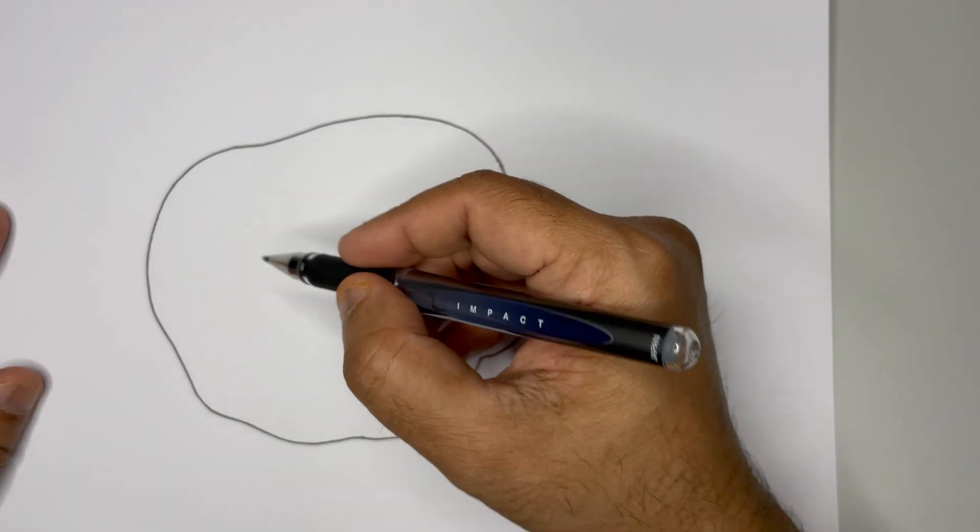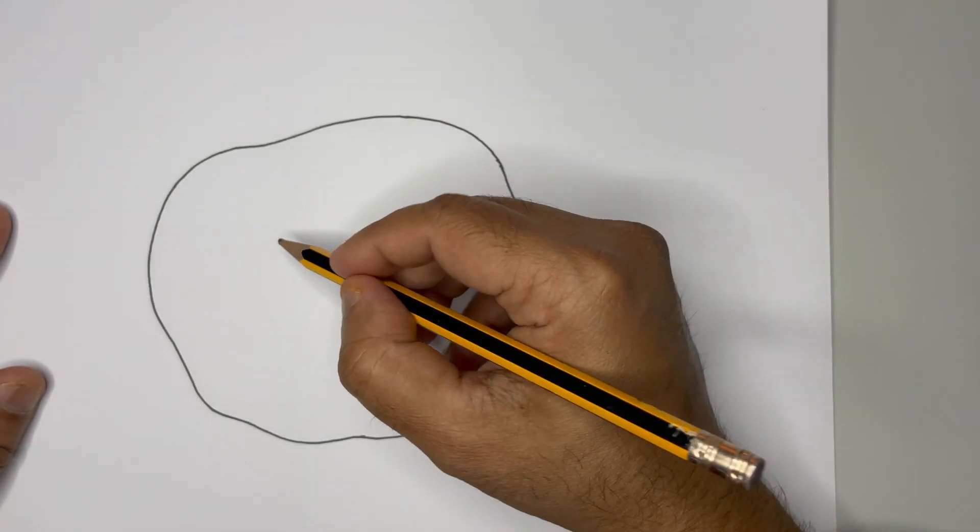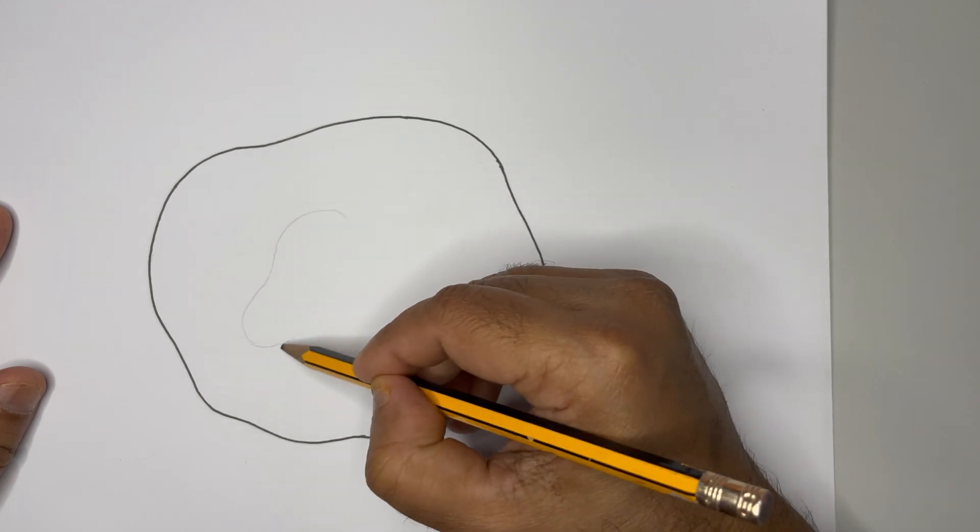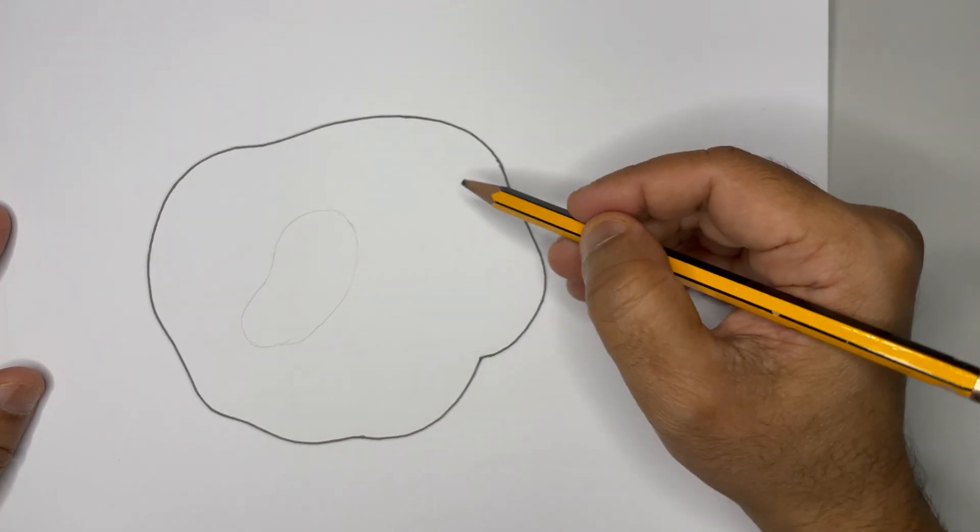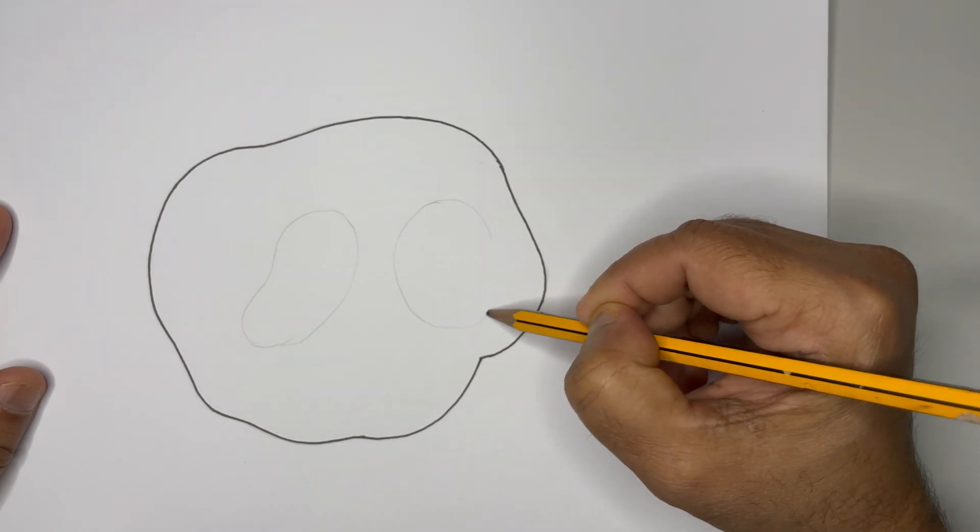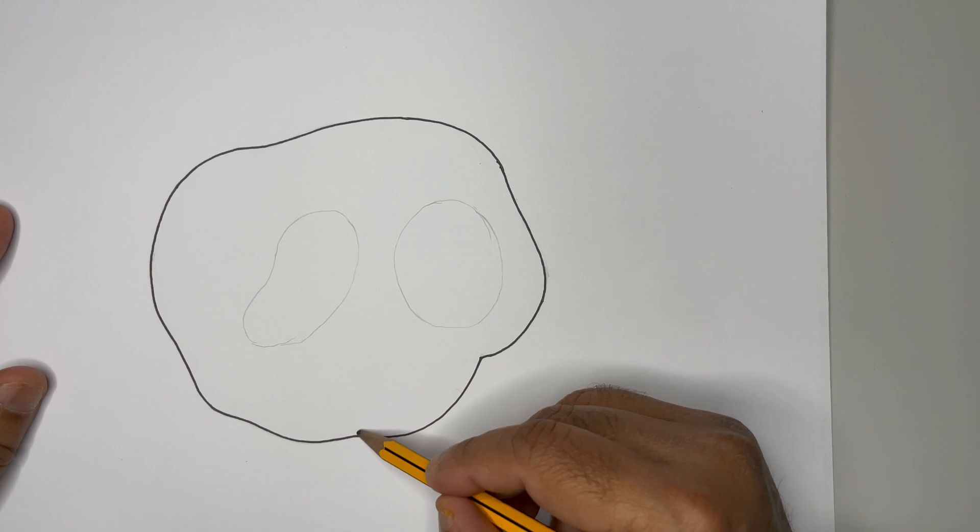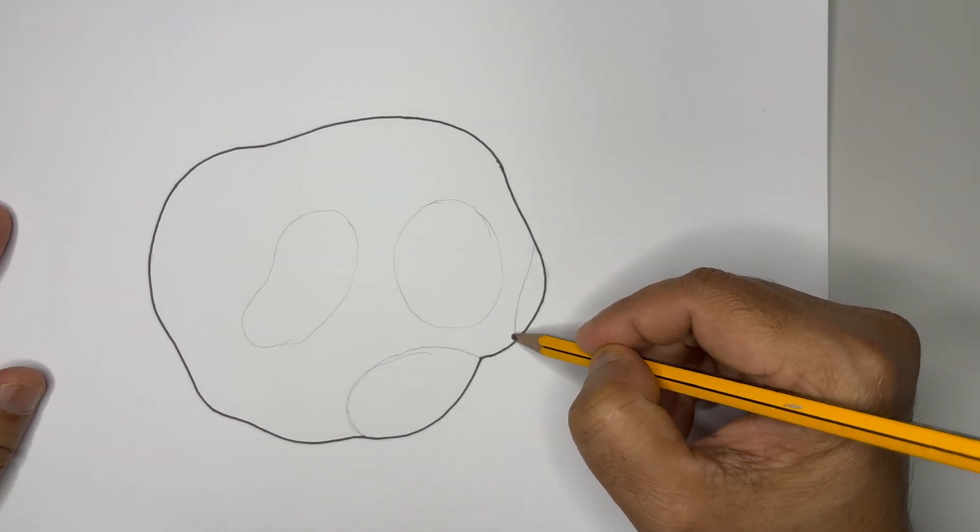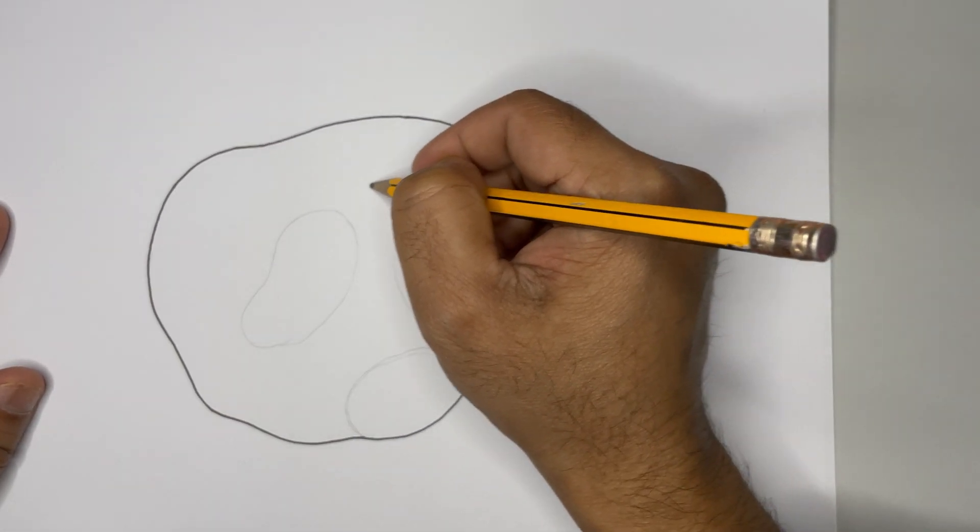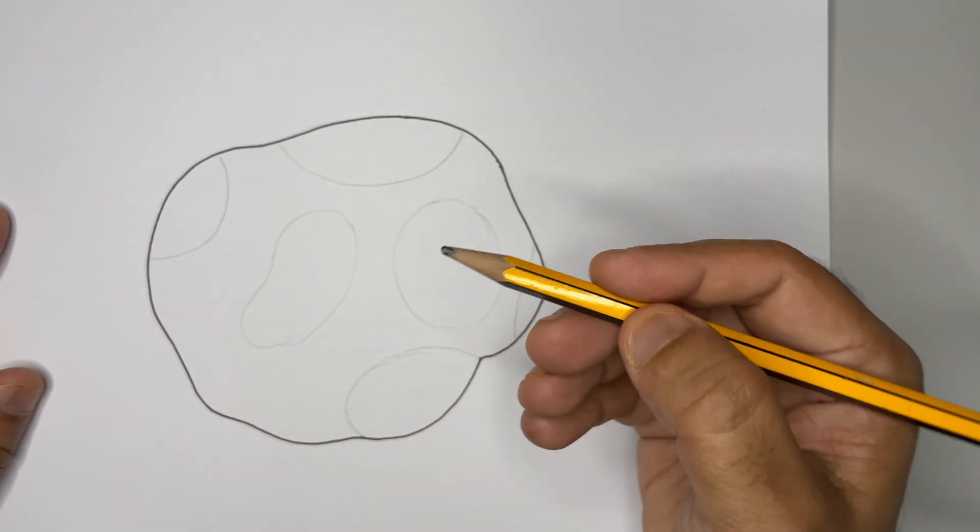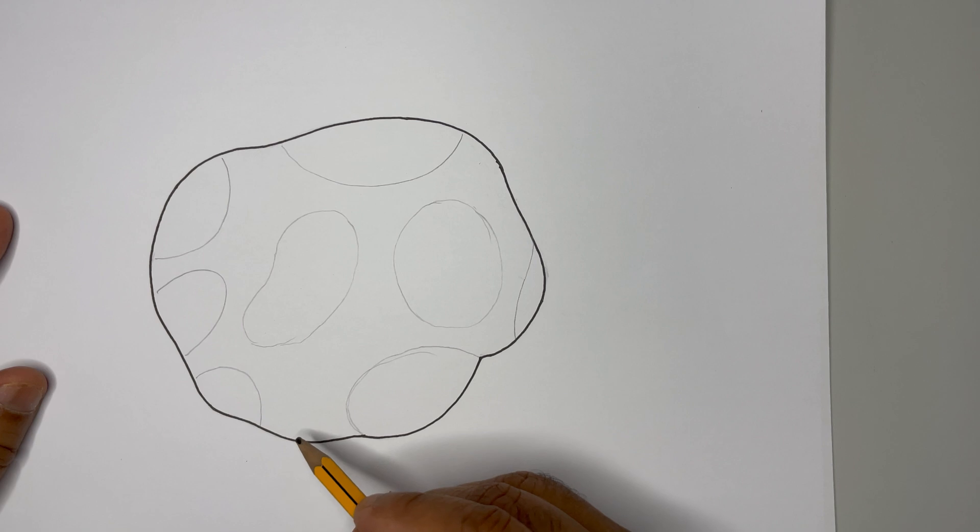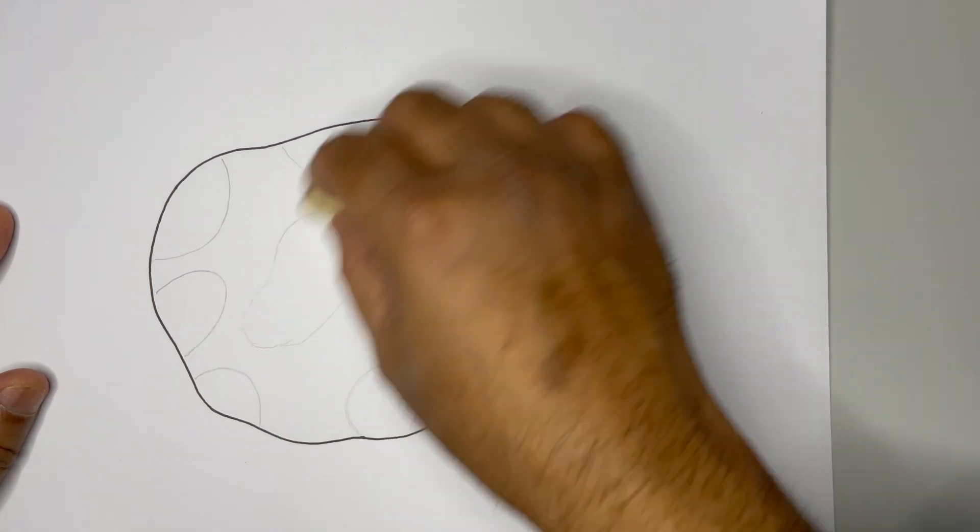Now let's draw some more outlines, some semiferous tubules. This outline is one, I'm going to draw one more here. This is my third one, and here might be the fourth one, a small one here. I could go for another one, a fifth one here, yet another one, and here we go for another one. That is it.